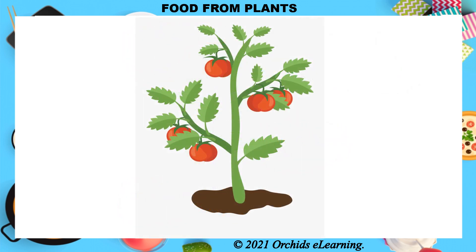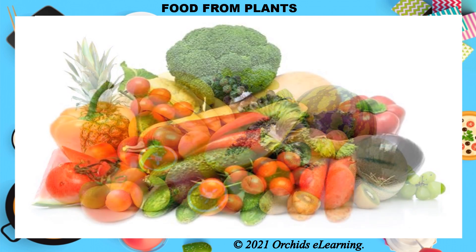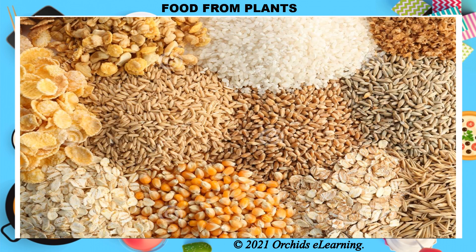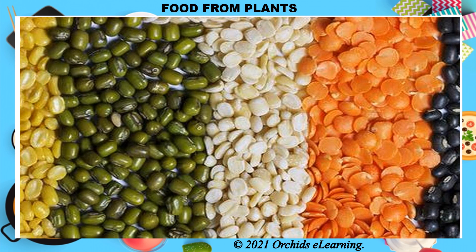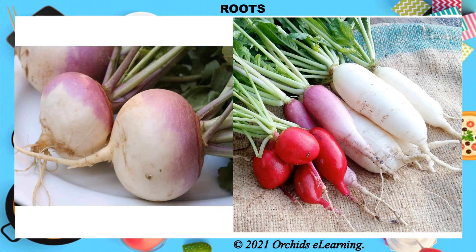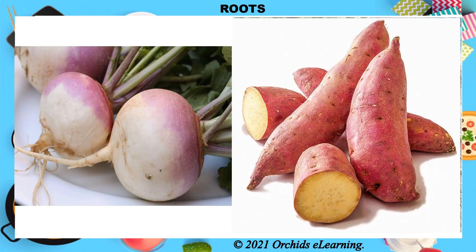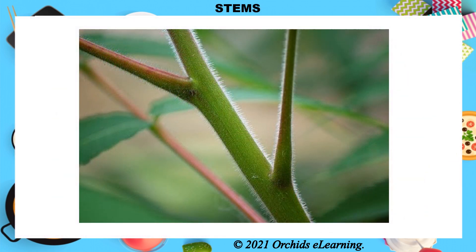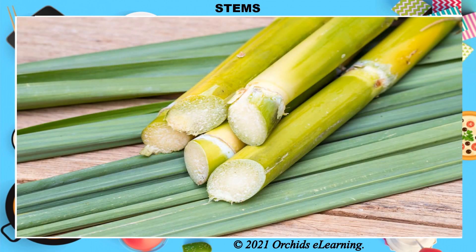Different plant parts serve as sources of food for us — fruits, vegetables, cereals, and pulses that we eat. We also eat roots of plants such as carrot, radish, turnip, sweet potato, and beetroot. Stems of certain plants are eaten by us; for example, the stem of the sugar cane plant is eaten and is also used to make sugar.